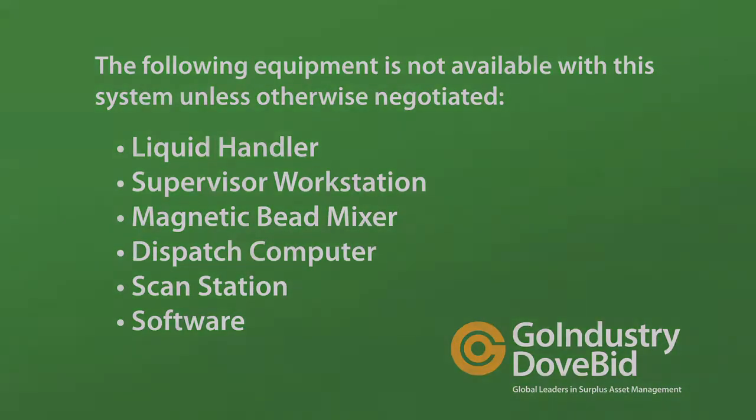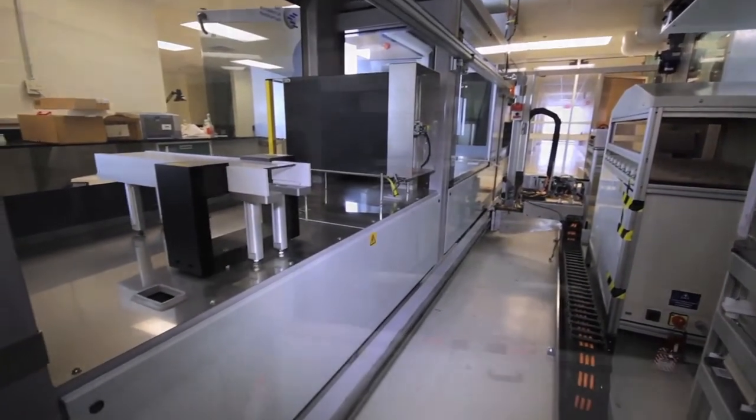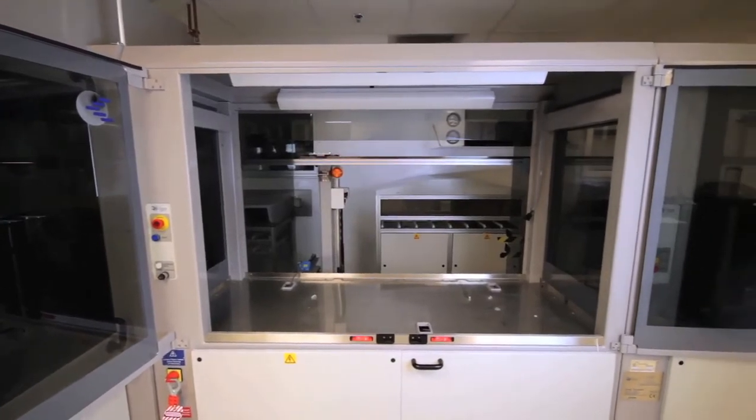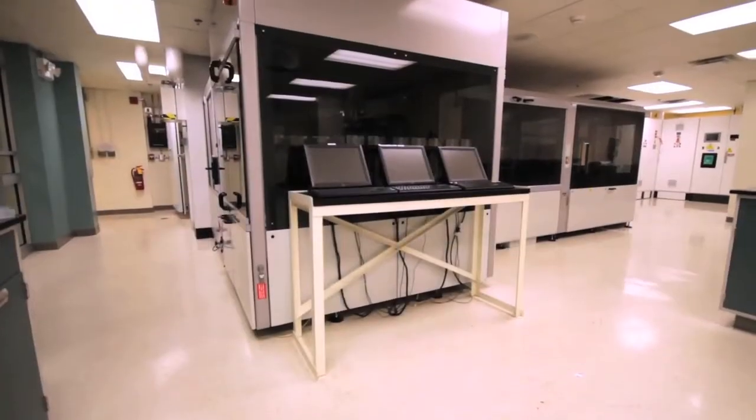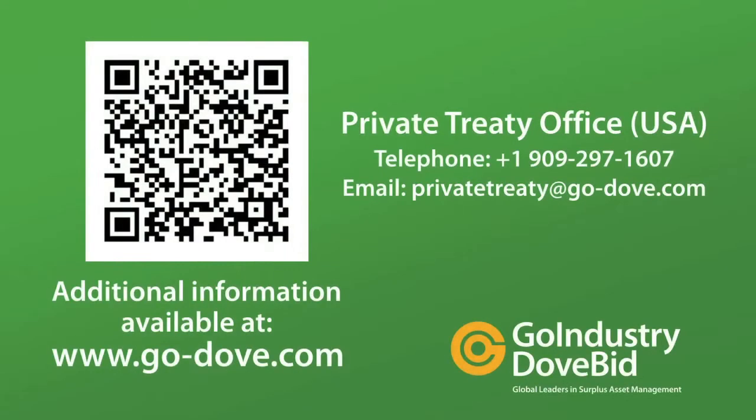The Automation Partnership is available to provide installation, support and service for this system. This solar dizygotic system is available through GoIndustry for immediate sale. Additional details available at GoIndustry DoveBid website, www.go-dove.com, including information on how the sale is arranged, with payment and logistical information.